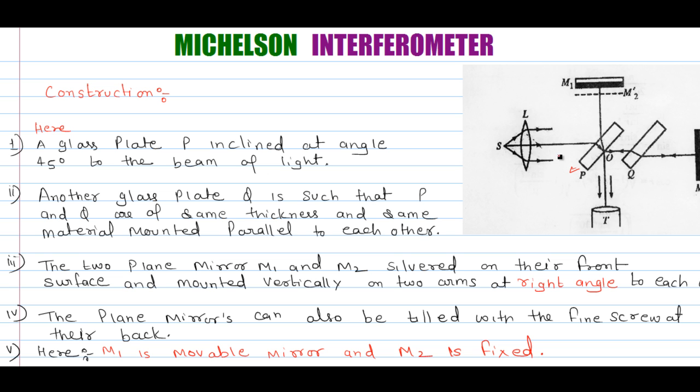Glass plate P is inclined at angle 45 degree to the beam of light. So this is the beam of light and this glass plate P inclined at angle 45 degree.